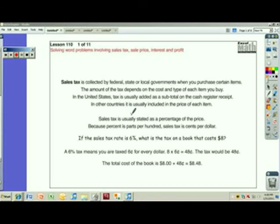Sales tax is collected by federal, state or local governments. Federal means the government in Washington DC. State is like whatever state you live in. Local means whatever city you live in, or the county, they're going to collect taxes when you purchase certain items. It's called sales tax.